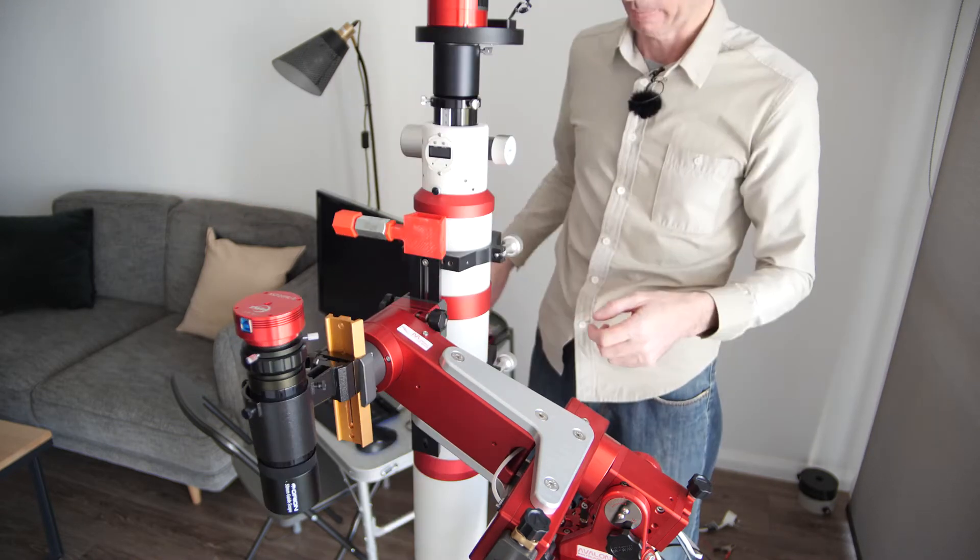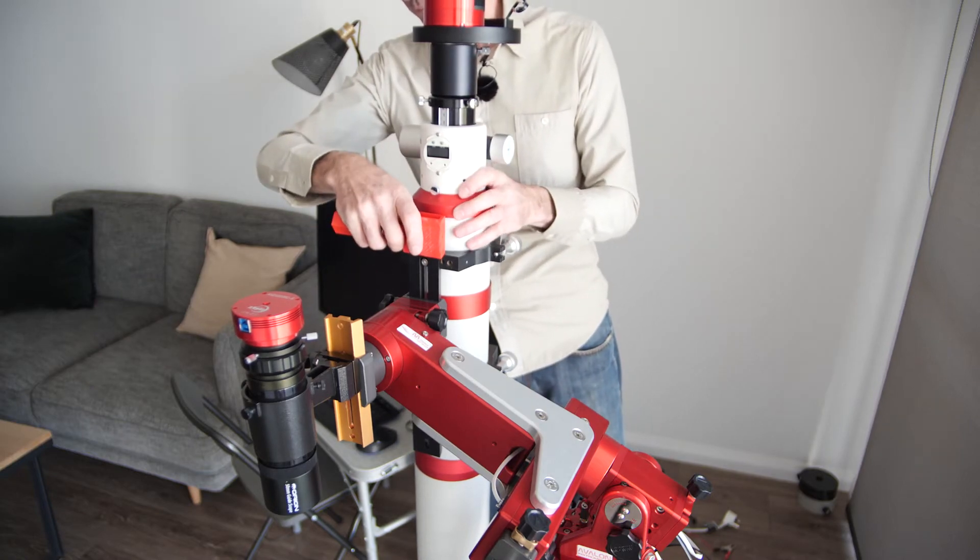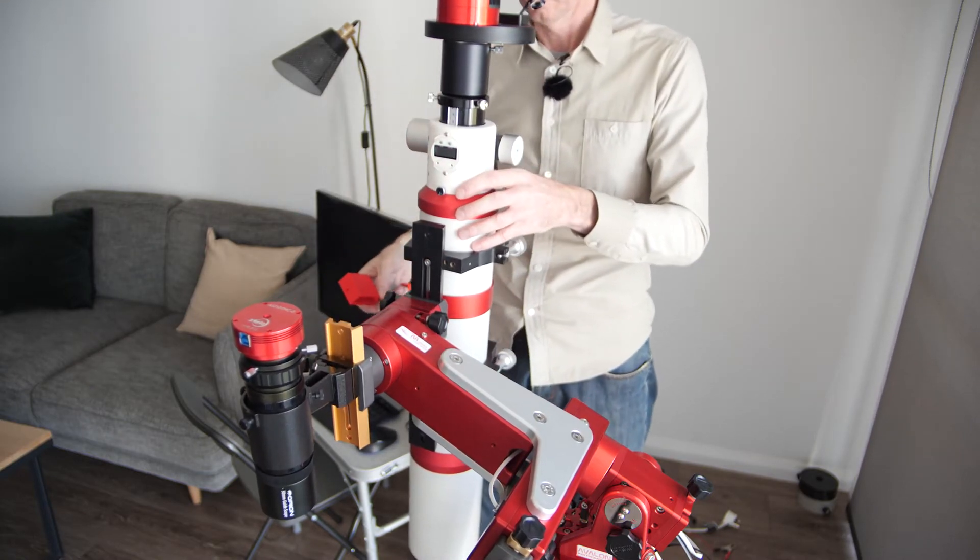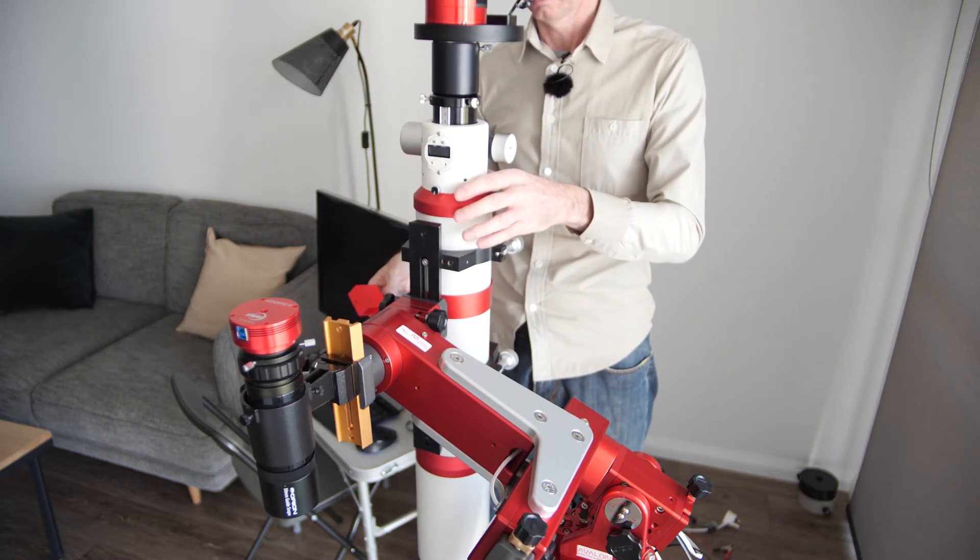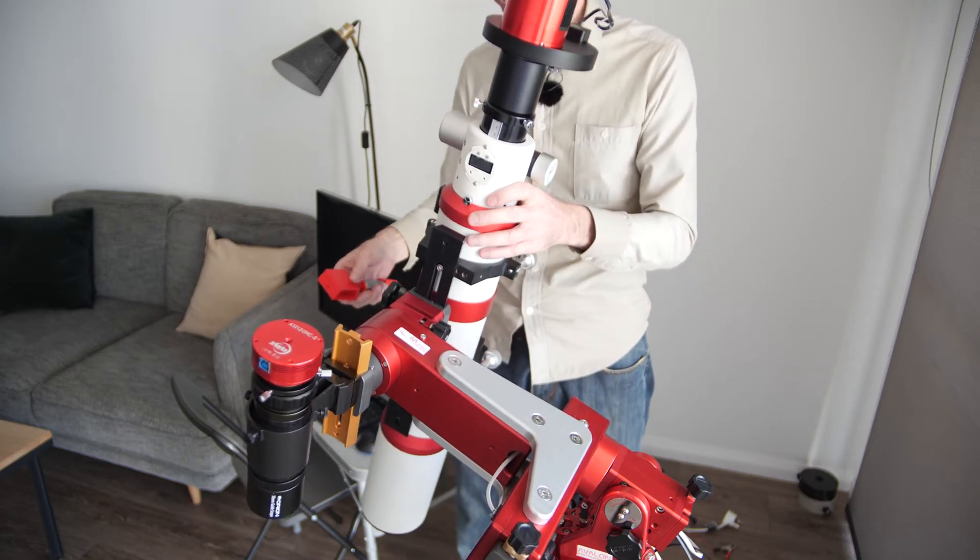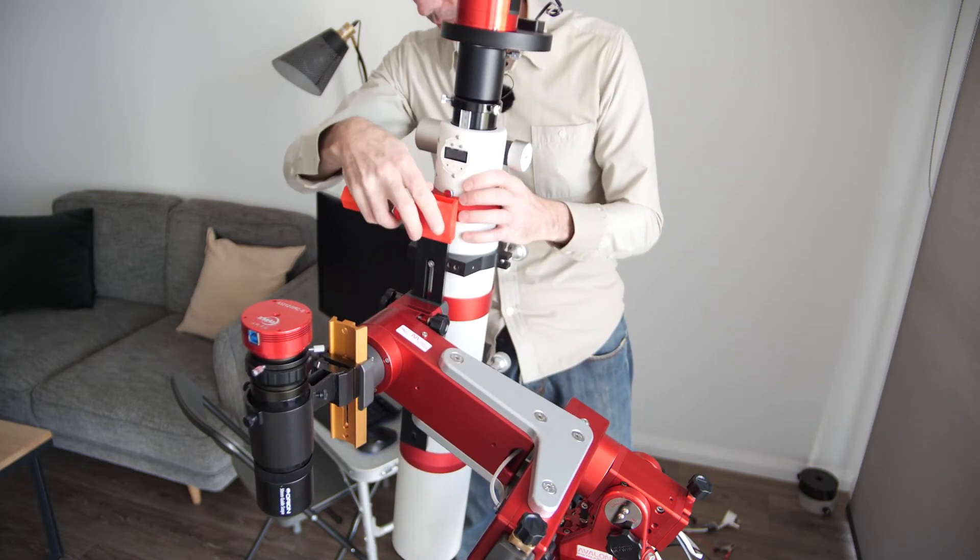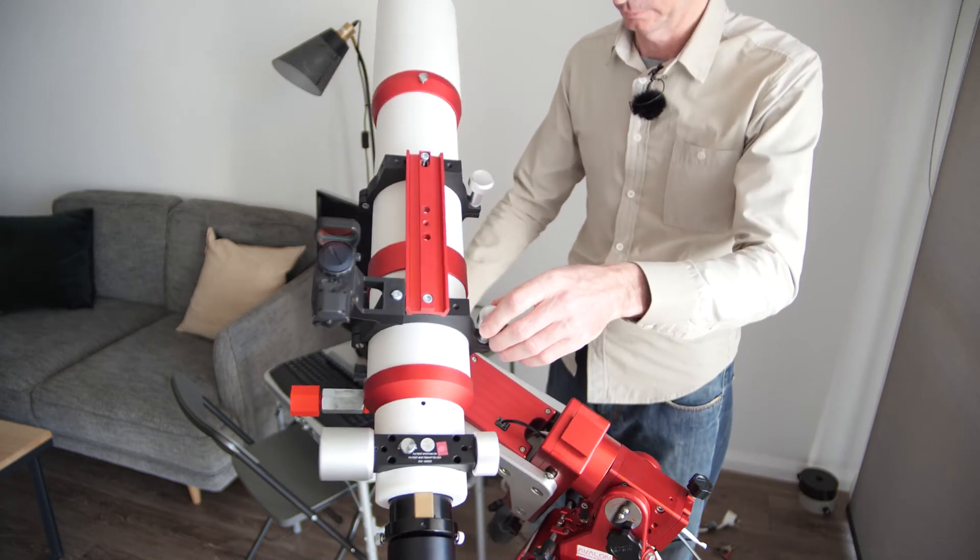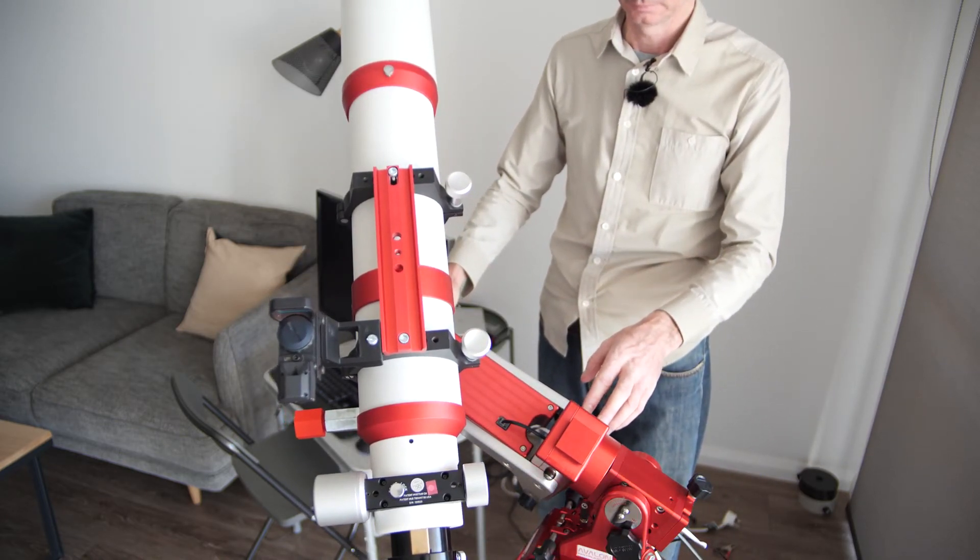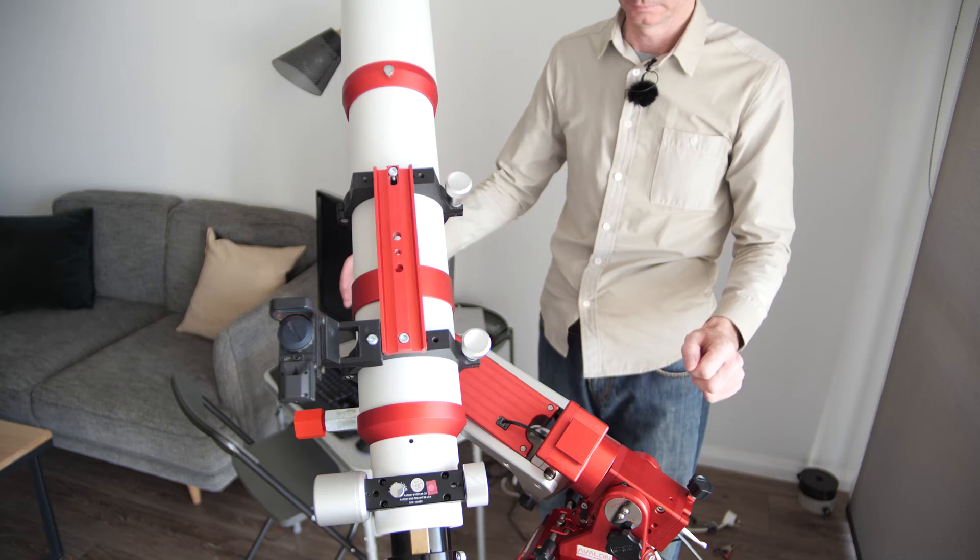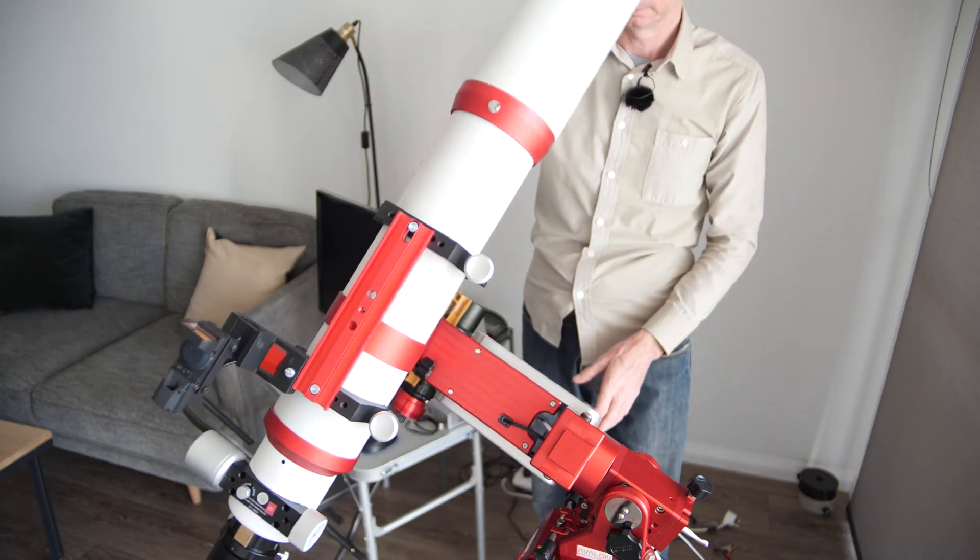And then it starts to rotate. With the 3D printed outrigger attached, the telescope can now be rotated to an arbitrary position and it remains stationary.